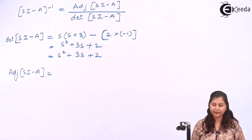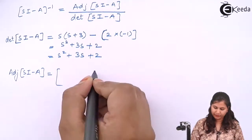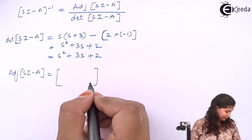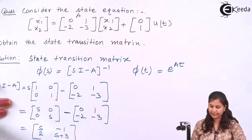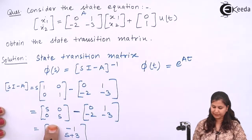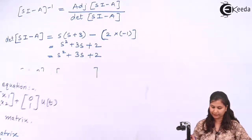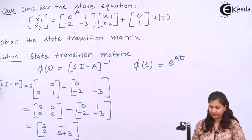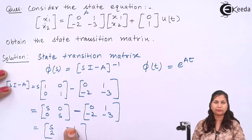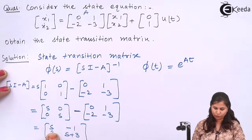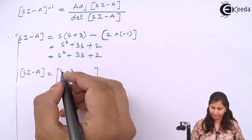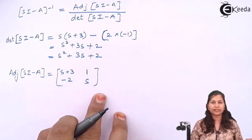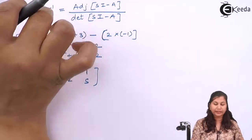The adjoint of (sI - A) is formed by exchanging the diagonal terms: s and s+3 swap positions, so s+3 goes to the top-left and s goes to the bottom-right. The signs of the off-diagonal terms are changed, giving [-1] becoming 1 and [2] becoming -2.